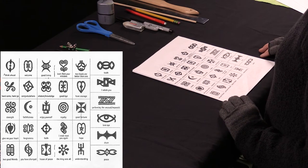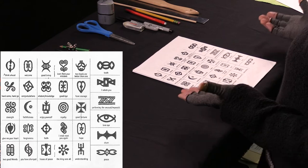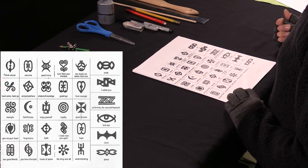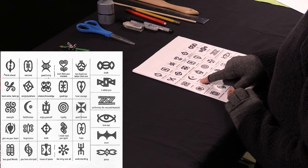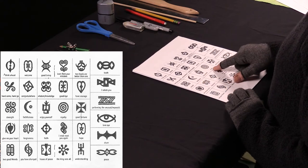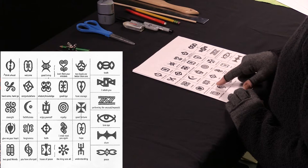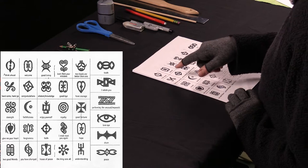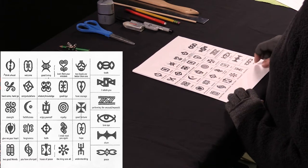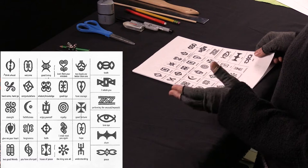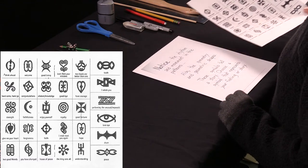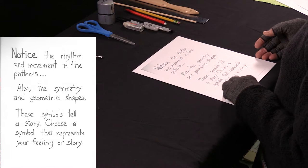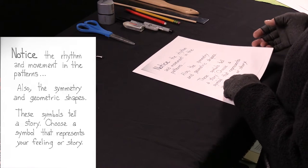Here are some symbols and their meanings that we could copy if we wanted to. Here's one that means faithfulness, one that means royalty, one that means forgiveness. Here's one that means welcome, for instance. So these symbols tell a story.